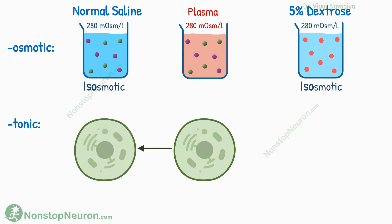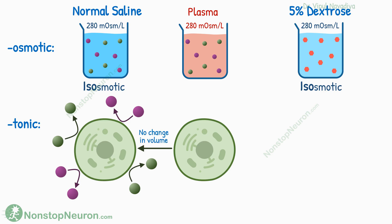When you put a cell in normal saline, there won't be any net movement of water across the cell membrane. That is because the cell membrane is impermeable to sodium and chloride, so there is no change in cell volume. Thus, in terms of tonicity, this solution is isotonic.